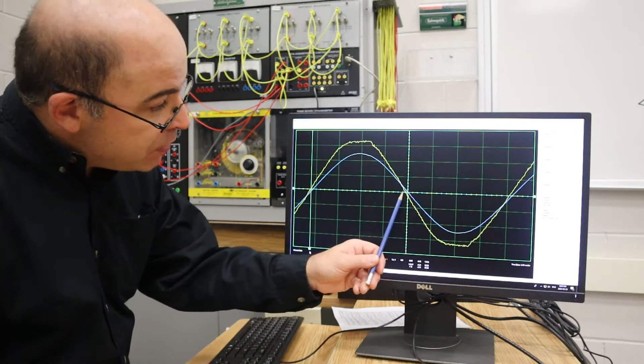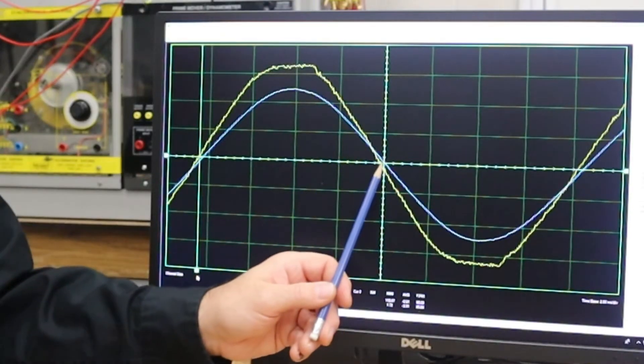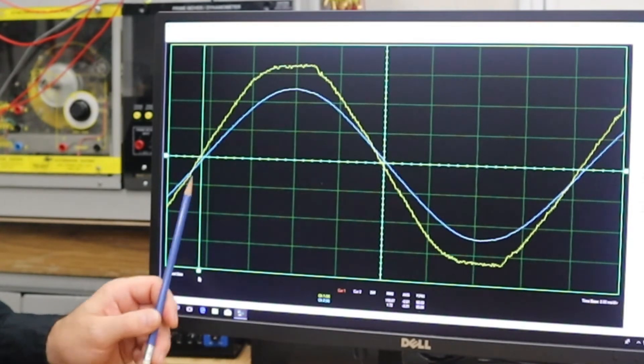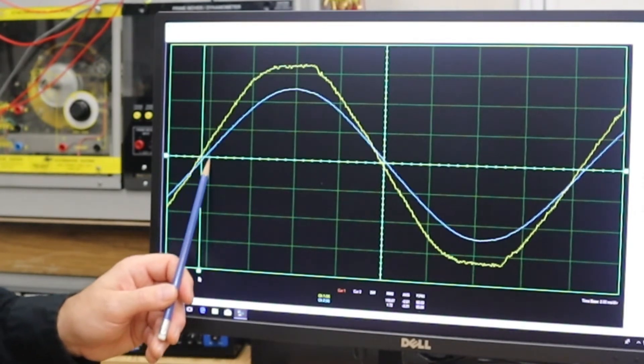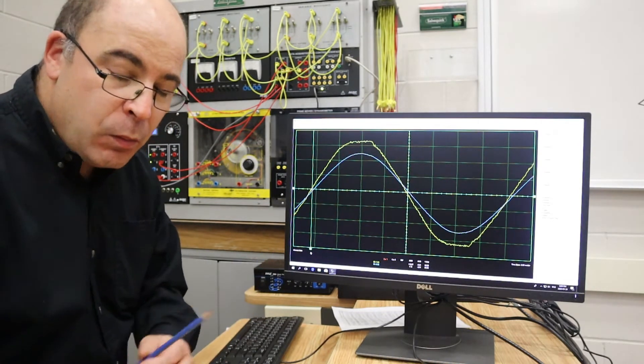Each one of these divisions here represents about 10 degrees. You'll notice that there's almost, if I move the cursor, that I don't have exactly 10 degrees. I've probably got about six. Now, there is a discrepancy.